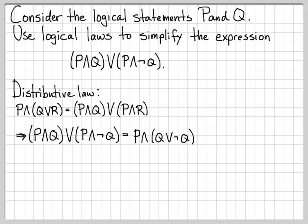That helps especially when we look at what's inside the parenthesized term: Q or not Q. That is what we call a tautology — something that is always true. When Q is true, not Q is false, giving us true or false, which is true. When Q is false, not Q is true, giving us false or true, which is also true. So no matter what value Q has, Q or not Q is always true. Always-true statements are what we call tautologies.